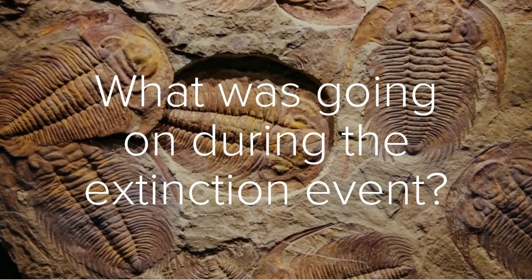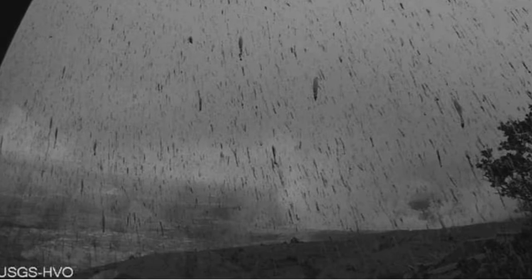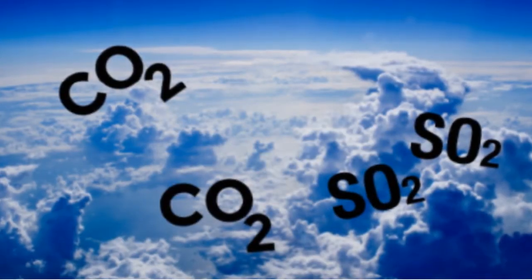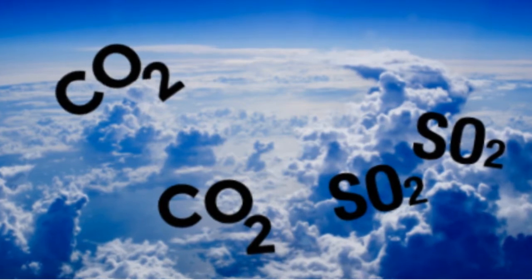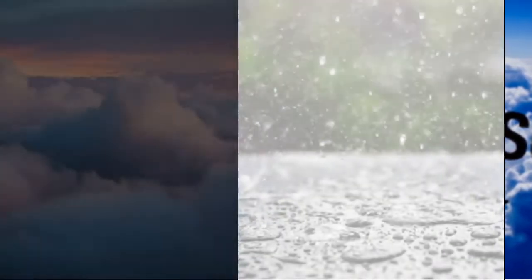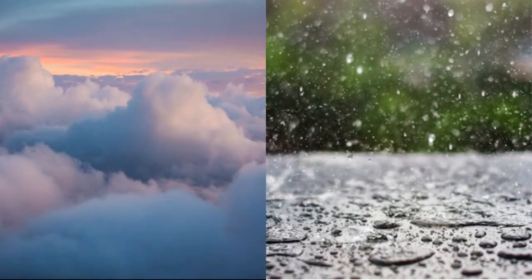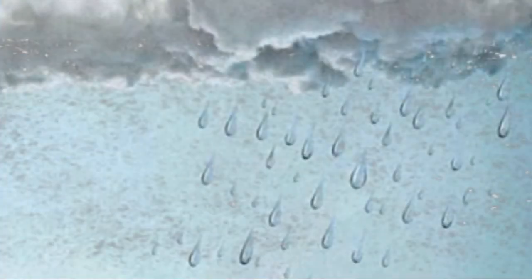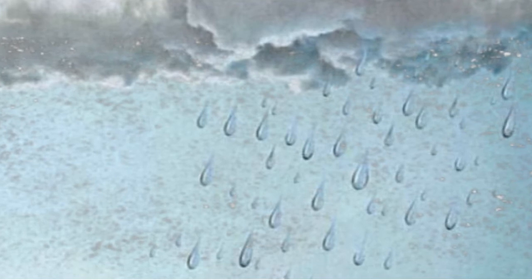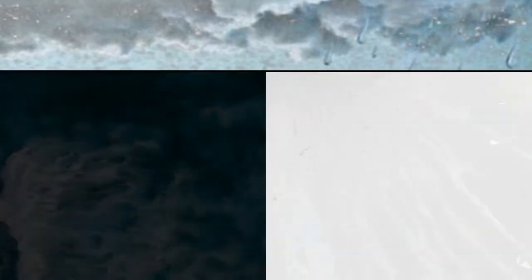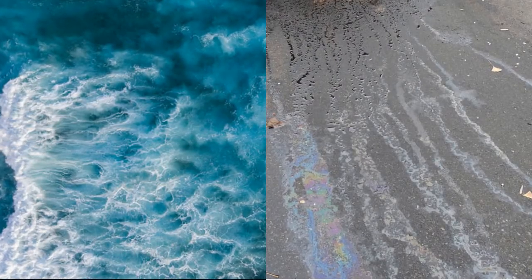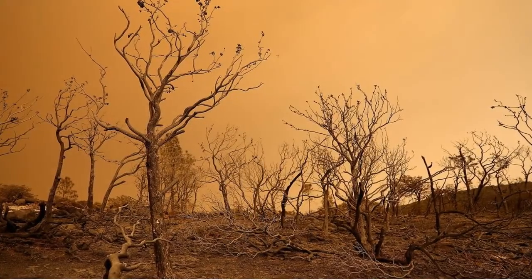What was going on during the extinction event? The lava covered the entire Siberian island, and ash from the eruptions fell worldwide and all over the supercontinent Pangaea. An unthinkable amount of CO2 and sulfur dioxide was released into the atmosphere. Sulfur dioxide plus water in the clouds equals acid rain. Acid rain and ash were falling in tremendous amounts across the globe, poisoning the oceans and soil, and causing vegetation to vanish. The CO2 caused a runaway greenhouse effect and caused the land to dry into a desert.